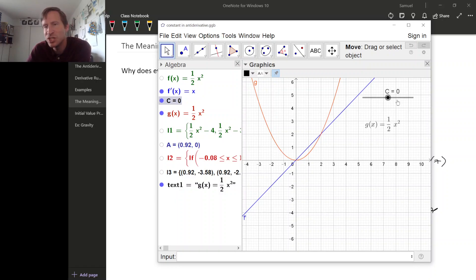So as we change C, visualize what happens to the slopes of the tangent lines. Okay, so here we go. Changing C.